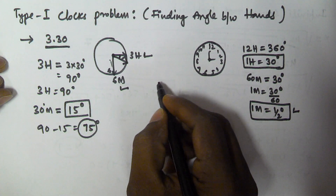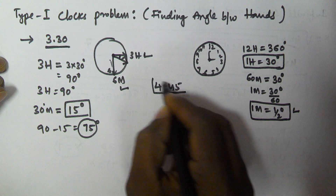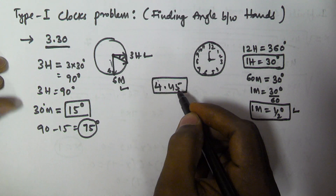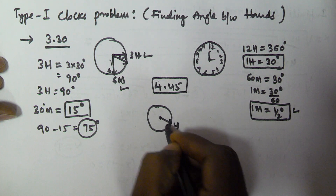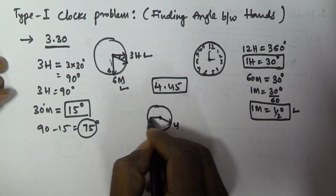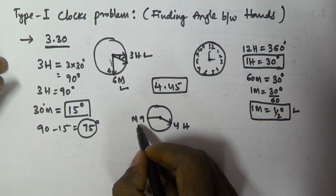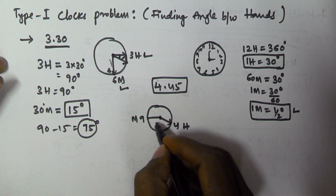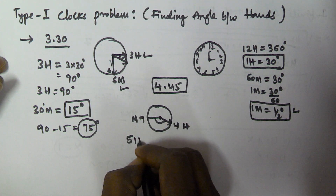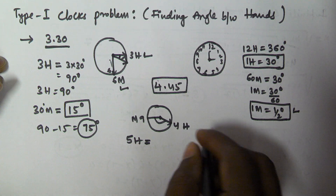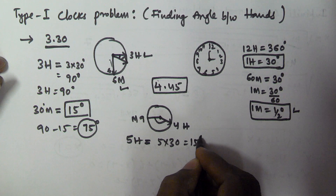Let's solve another problem. The given time is 4:45. When the time is 4:45, the hours hand is at 4 and the minutes hand is at 9. So the number of hours difference between 4 and 9 is 5 hours. 5 hours is equivalent to how many degrees? 5 multiplied by 30 equals 150 degrees.